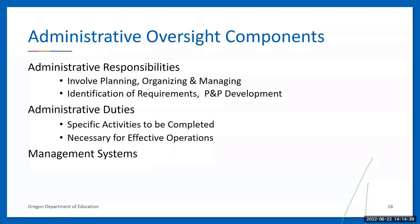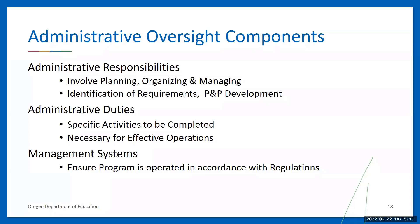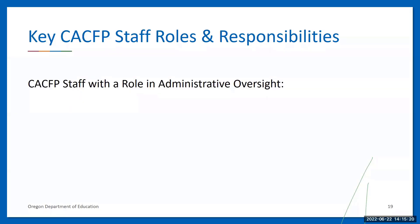Administrative responsibilities are broad and involve all aspects of planning, organizing, and managing the food service under the CACFP. They are the basis for identifying all program requirements and determining the specific policies and procedures necessary to ensure the CACFP is administered adequately. Administrative duties are the specific activities that must be completed to effectively operate the CACFP, including completing program application updates, ensuring menus meet meal pattern requirements, training staff, conducting monitoring, record keeping, managing site changes, civil rights compliance, validating and submitting claims, reimbursing homes, and tracking the use of federal funds.